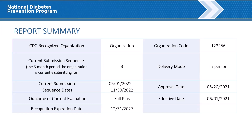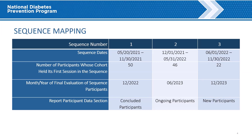In this example, we see that this organization is achieving full plus recognition based on their current evaluation. The sequence section displays information on the three types of participants reflected in the report: concluded, ongoing, and new. Concluded participants are those who are now finished with the program; their cohorts started 12 to 18 months prior to the current data submission and their data are ready for evaluation. Ongoing participants are those whose cohorts started 6 to 12 months prior and whose data will be ready for evaluation in 6 months, at the time of the next data submission. New participants are those whose cohorts started within 6 months prior to the current data submission and whose data will be ready for evaluation in 12 months.